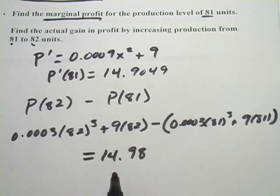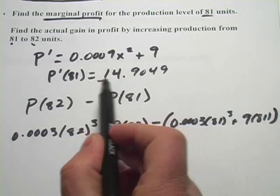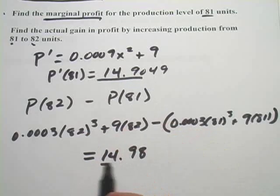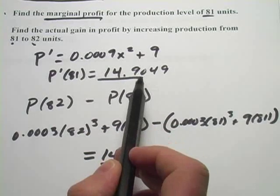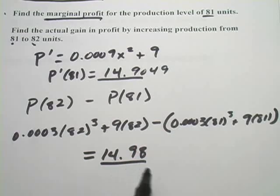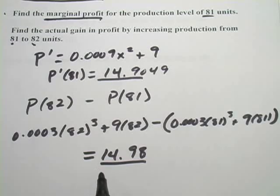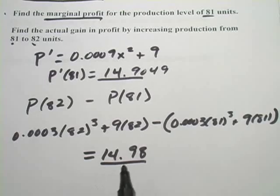You'll definitely want to punch this through on your calculator and double check, make sure I did the math right. But if you look at this, we got 14.90 versus 14.98. That's a pretty good approximation of what the actual profit is for producing that one more item. So those are a couple of examples of how we can use calculus and the derivative in some business applications.